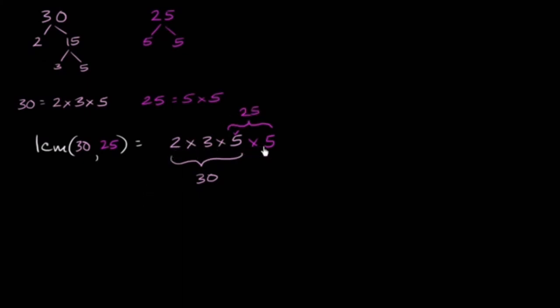And this is the least common multiple. If we just wanted a common multiple, we could have thrown more factors here and it would have definitely been divisible by 30 or 25. But this has the bare minimum of prime factors necessary to be divisible by 30 and 25. If I got rid of any one of these, I wouldn't be divisible by both anymore. If I got rid of this 2, I wouldn't be divisible by 30 anymore. If I got rid of one of the 5s, I wouldn't be divisible by 25 anymore.